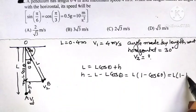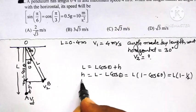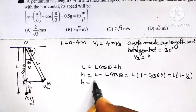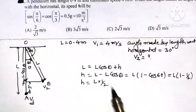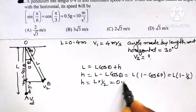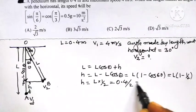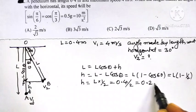So height H is found to be L times 1 by 2. But length of pendulum is given as 0.4, divided by 2, so height will become 0.2 meters.